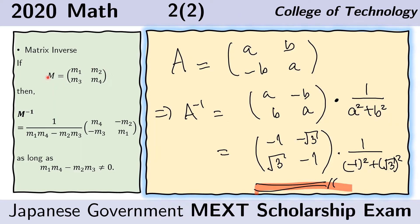We just need to recall that for a 2x2 matrix, the inverse is given by this matrix here where we just switched M sub 1 and M sub 4, and we put a negative sign in front of M sub 2 and M sub 3.